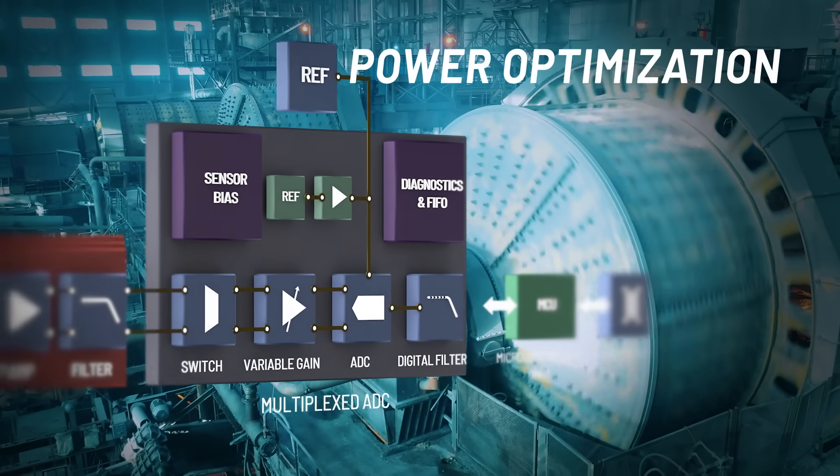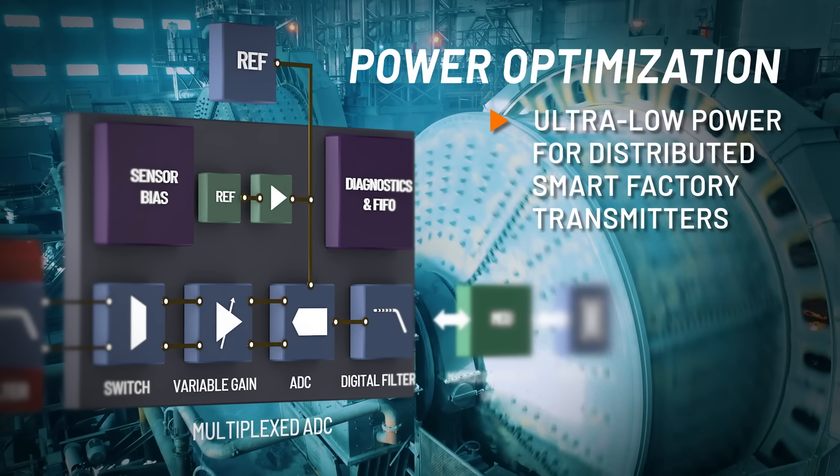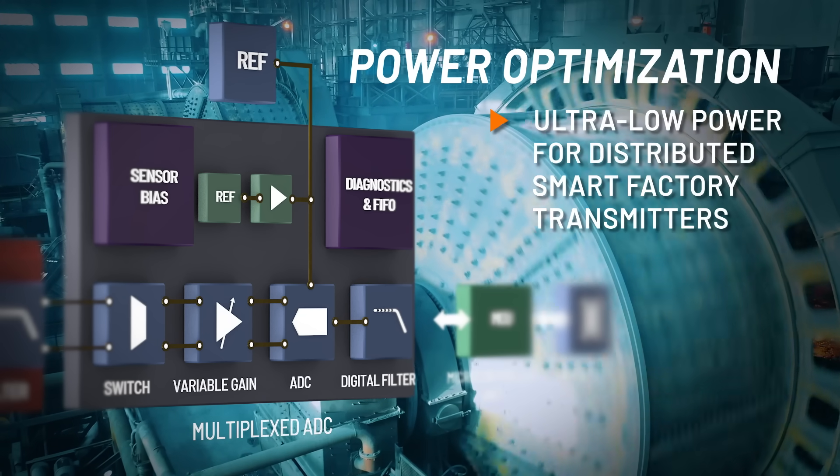Power optimization techniques like duty cycling, sample rate control, onboard FIFO, and smart sequencer reduce battery or loop-powered current consumption.